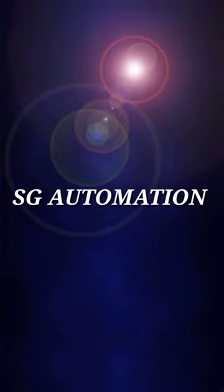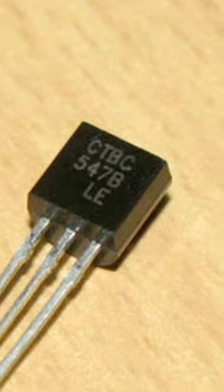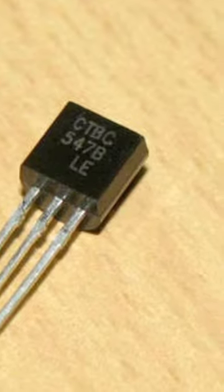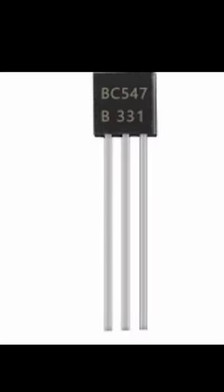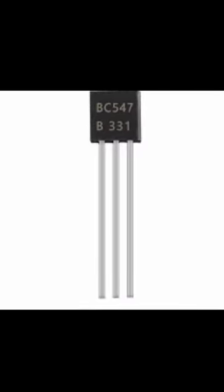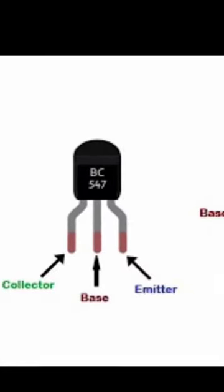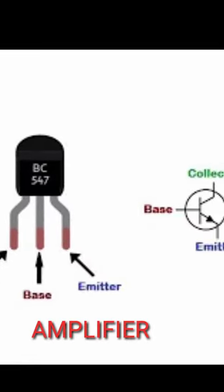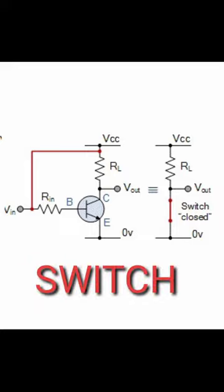Hey there, welcome to our channel. Today we're going to talk about how to use a BC547 transistor as a switch. The BC547 is a common NPN bipolar junction transistor. It can be used as an amplifier, but today we'll focus on how to use it as a switch. As you can see, the transistor has three pins.